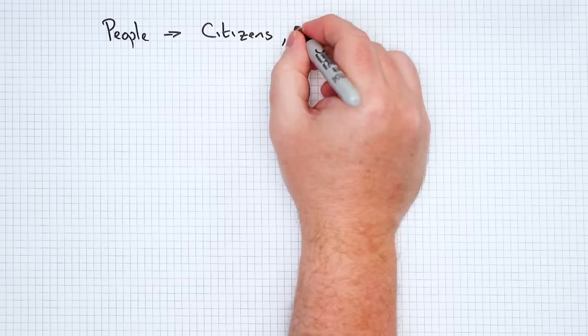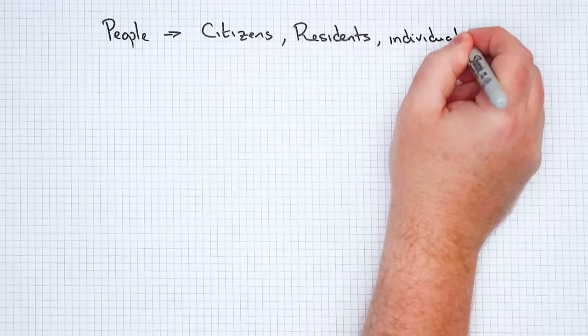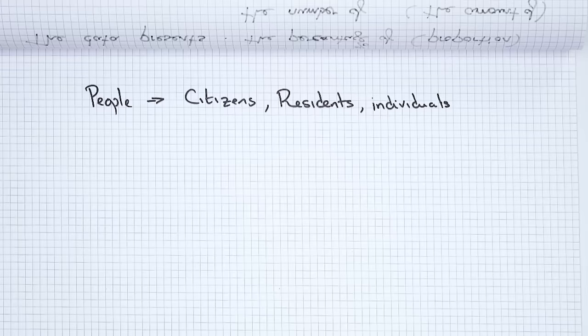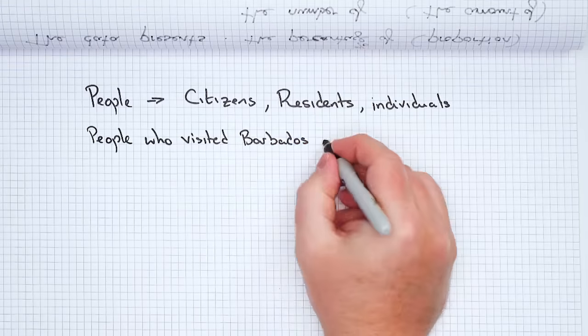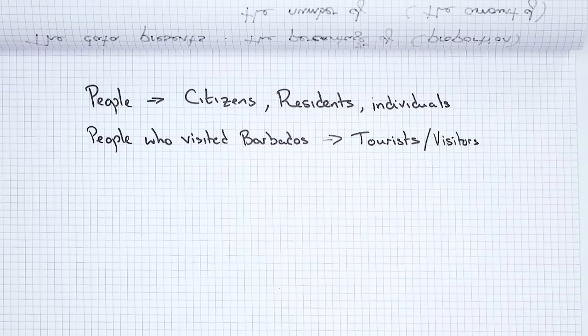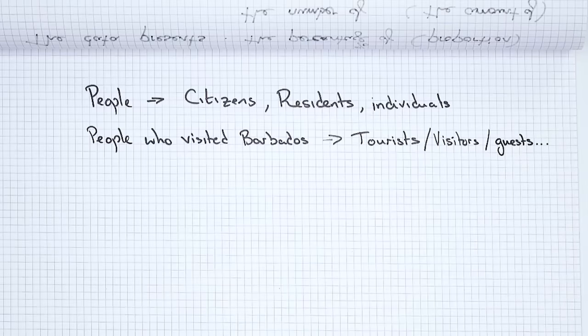So we could talk about 'citizens' or 'residents,' if we're talking about people living somewhere, or 'individuals.' But remember, if you get a question about people, you're probably going to have to use the word — or a synonym — multiple times throughout your report. A way of doing that is to think about the context. So let's say it is people who visited Barbados — what could we call these people? Well, we could call them 'tourists,' or 'visitors,' or because the people in Barbados are very friendly and hospitable, we could call them 'guests.' So don't just think generally 'how do I change people?' — think specifically what these people are.